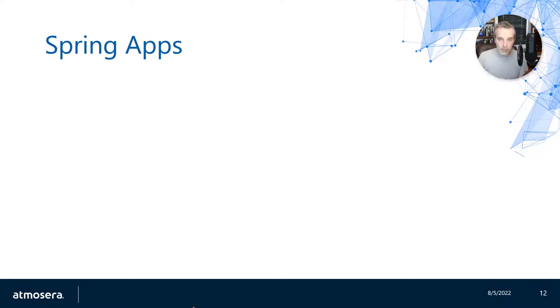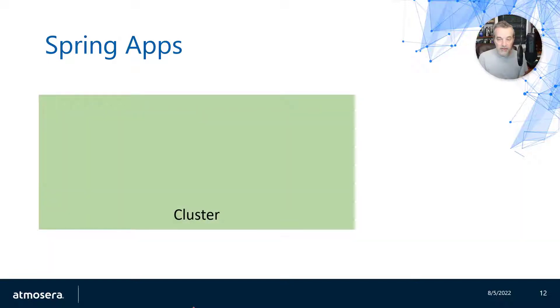I'm not going to be going into details about the code that I'm going to be writing. I'm mostly going to be looking at the Azure side of this and how you can use this in your code, although we might look at some code samples along the way. Spring Apps on Azure starts with a cluster, and the cluster is basically a set of resources that you can use for your apps. Now each tier — there are three of them — have different amounts of CPU and RAM that you can use among the apps that you deploy to this cluster.